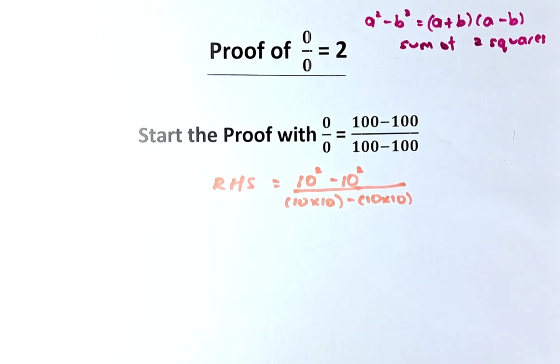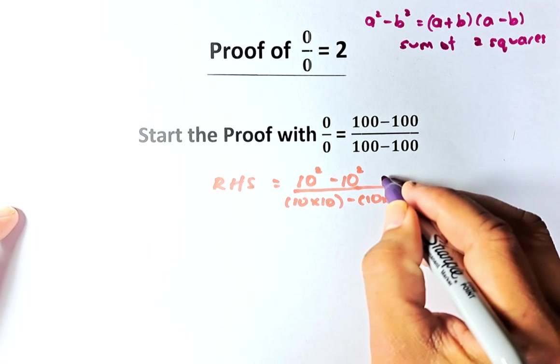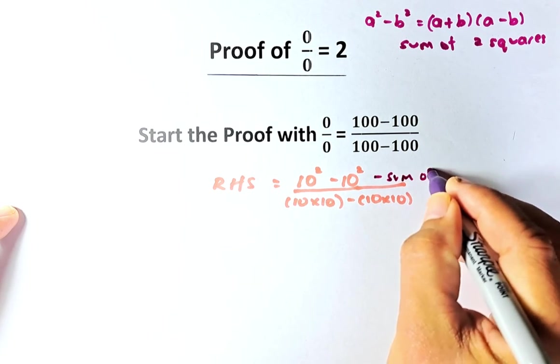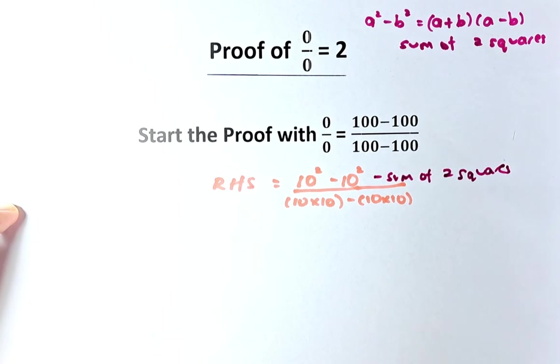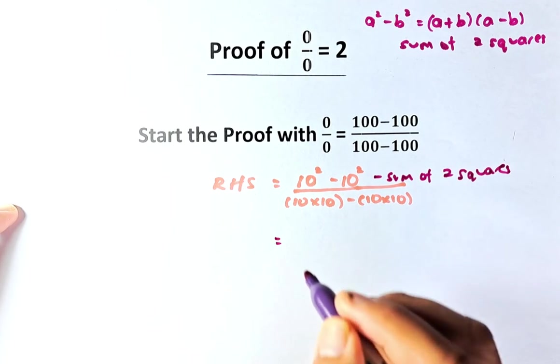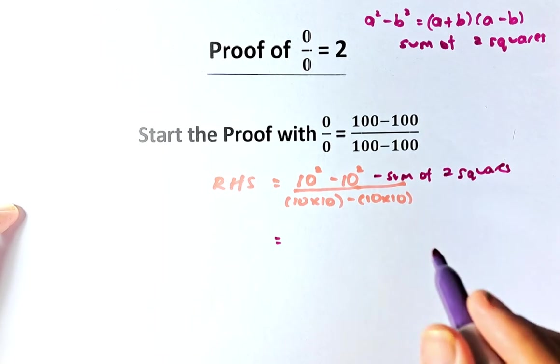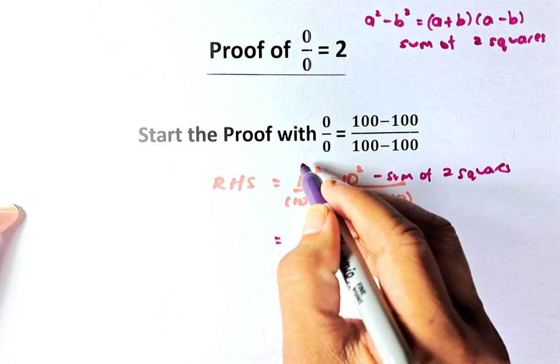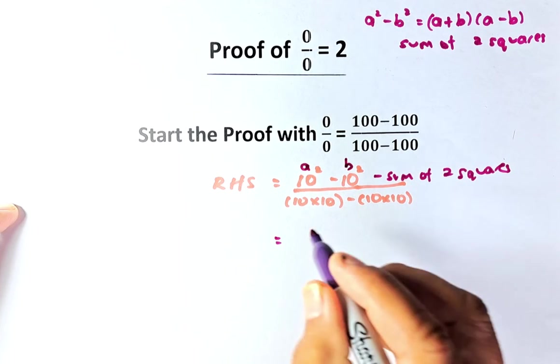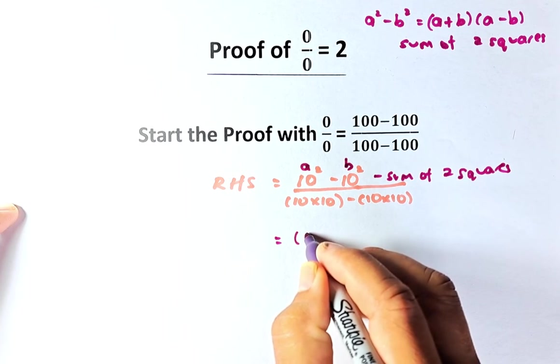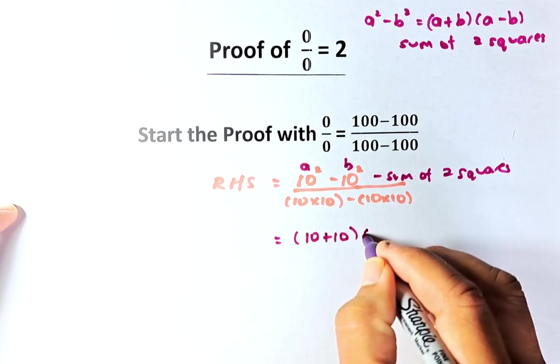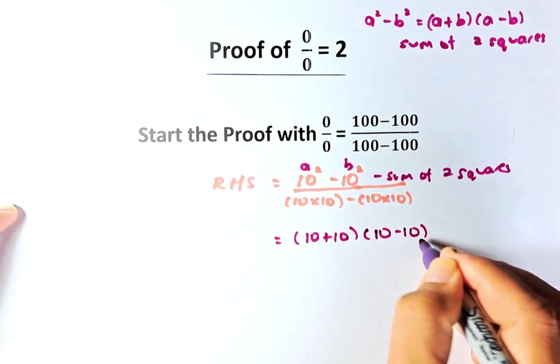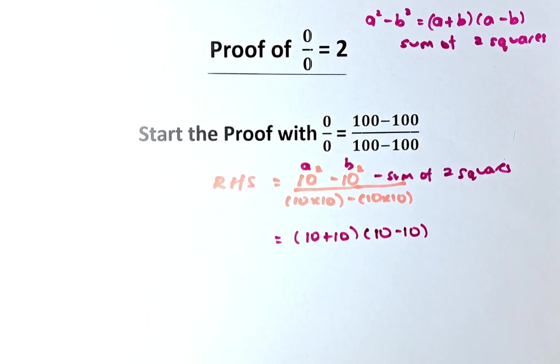So what we're going to do, we are going to simplify. This is the sum of 2 squares. The numerator is sum of 2 squares. We're going to replace it by A plus B, A minus B. So A is 10, B is also 10. So we're going to change it to 10 plus 10, A plus B, 10 plus 10, and then 10 minus 10. So far, so good.